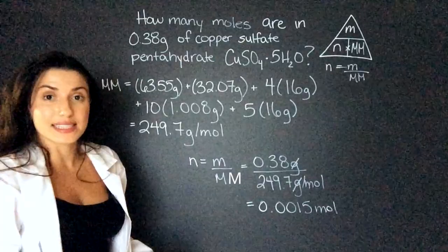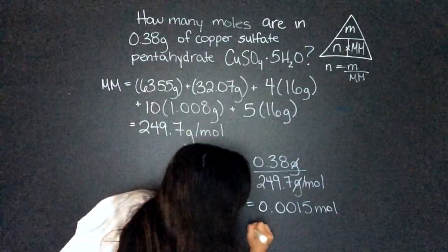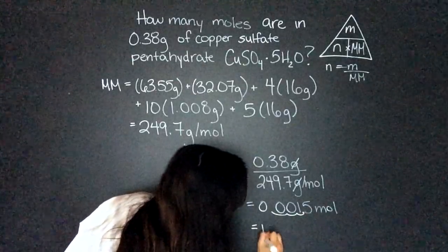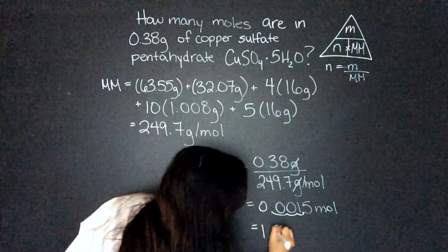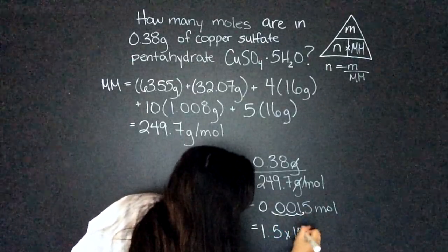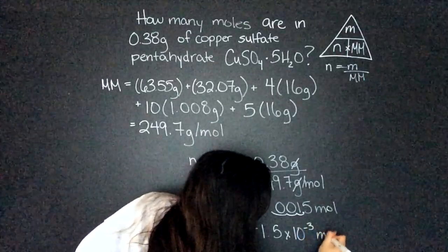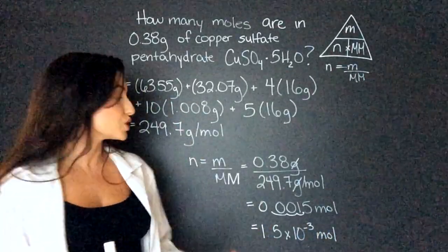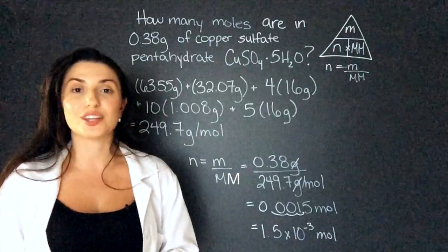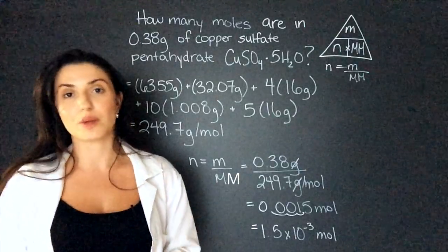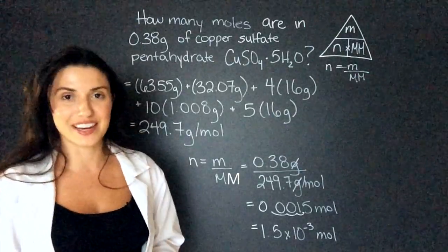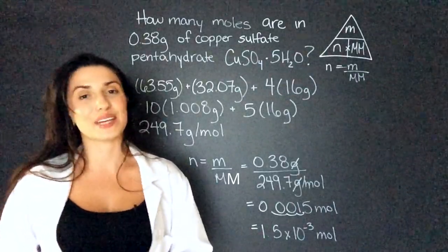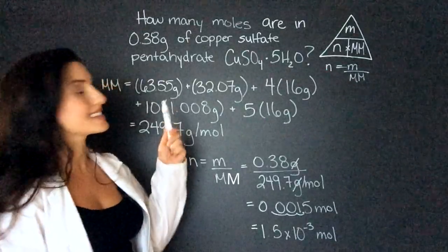If we wanted to write that in scientific notation, we count three decimal places: 1.5 times 10 to the negative 3 moles. If you need a review on significant figures or scientific notation, there are videos on my channel that cover that and I'll link them here. Our final answer is 1.5 times 10 to the negative 3 moles in this sample. Pretty easy once you get the hang of it.